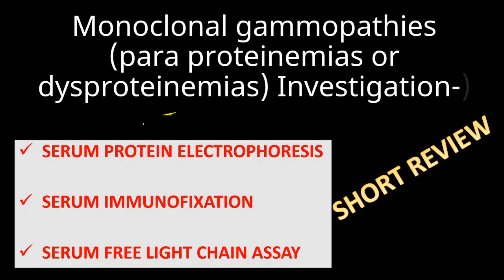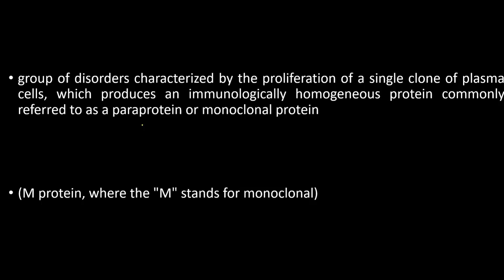The typical example is myeloma. Before going into the investigations, let's see what monoclonal gammopathies are. These are a group of disorders characterized by the proliferation of a single clone of plasma cells, resulting in the production of abnormal immunoglobulins in excess.